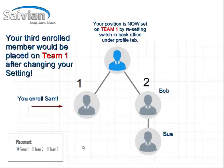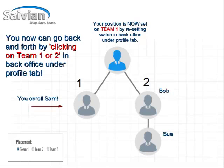This is basically how the placement settings are currently set up with Savion. It will default to the sponsored leg they put you on, and that's where you want to start building. After that, you'll be able to toggle in the placement area. Avoid Team 3 until you become a five-star founder, then flip on Team 3 and start building your third leg at the ambassador levels. You can go back and forth by clicking the toggles of Team 1 and Team 2 to put your next enrolled member into your organization.